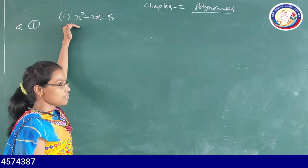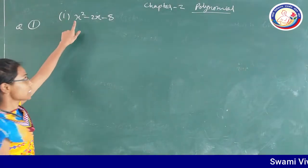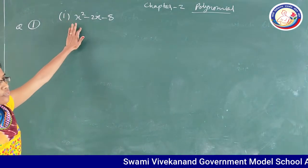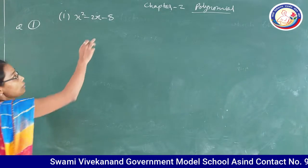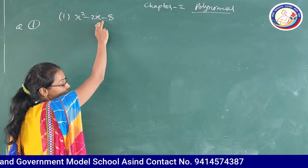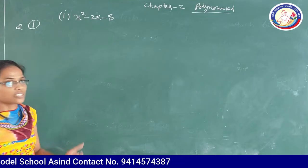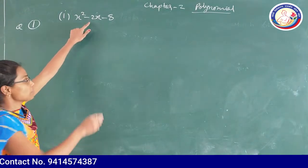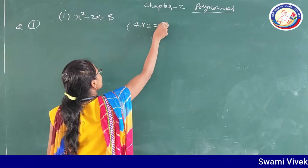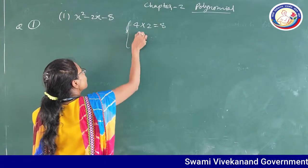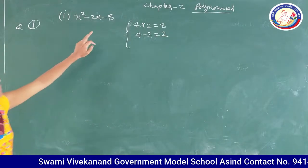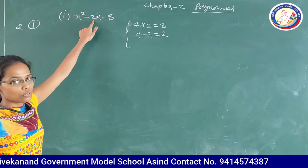To find zeros by the factorization method, first we check whether the coefficient of x² is positive 1 or not. Here it is positive 1. Now the constant term is 8 with a minus sign. We need factors of 8 such that their difference gives 2. So 4 times 2 equals 8, and 4 minus 2 equals 2. So we can write minus 2x as minus 4x plus 2x.